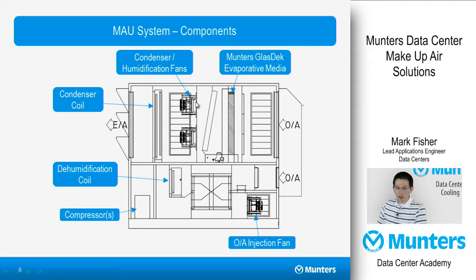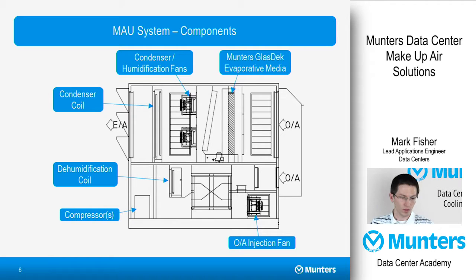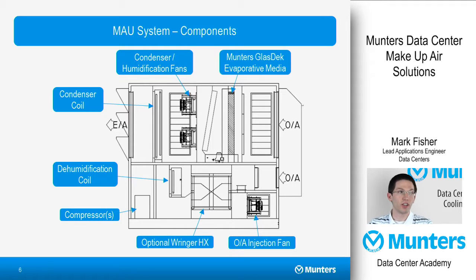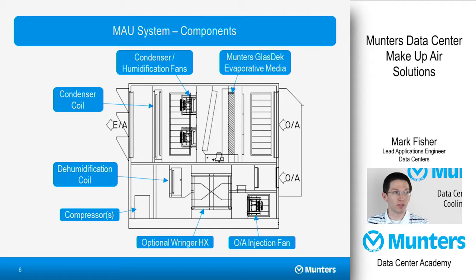The humidification fans become condenser fans during summertime when the DX system is active. To provide additional energy savings, we can incorporate a ringer heat exchanger into the dehumidification side of the system. This will reduce both the operating energy and the peak energy consumption of the system by up to 30 to 40 percent.